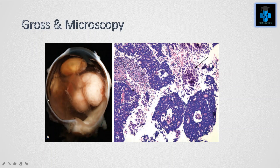Here is an eyeball where we can appreciate the intraocular vitreous cavity with the tumor. In the microscopic view, small blue round cells and tumor cells are seen around the empty space. This is an example of a Flexner-Wintersteiner rosette.